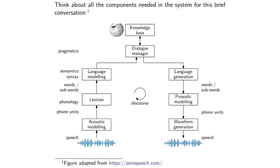I gave the system an utterance — I asked what's the weather in Cape Town today — and in most systems what would happen is the speech would get passed through something called an acoustic model. The acoustic model would produce an output sequence of something called phones, which are the smallest units used in languages, and then typically you would process the sequence of phones through something called a lexicon.